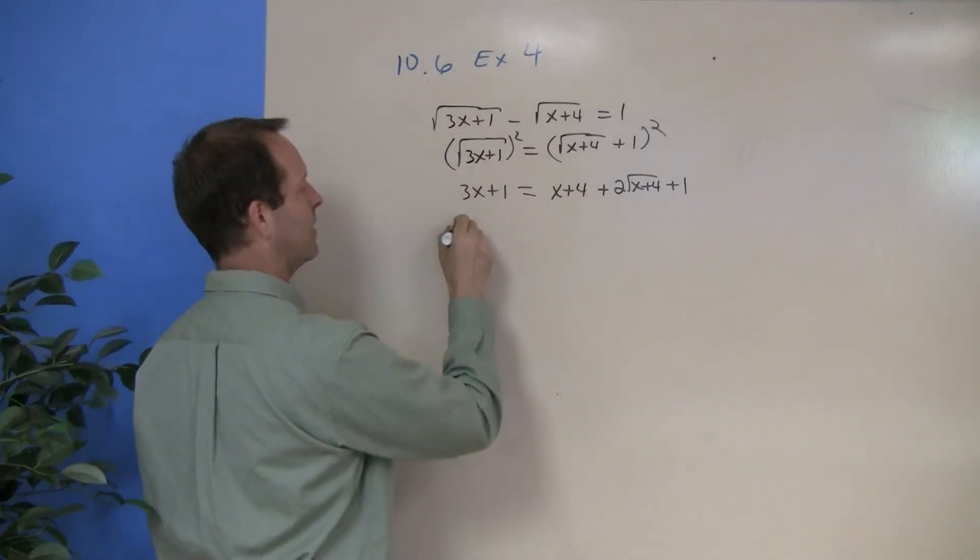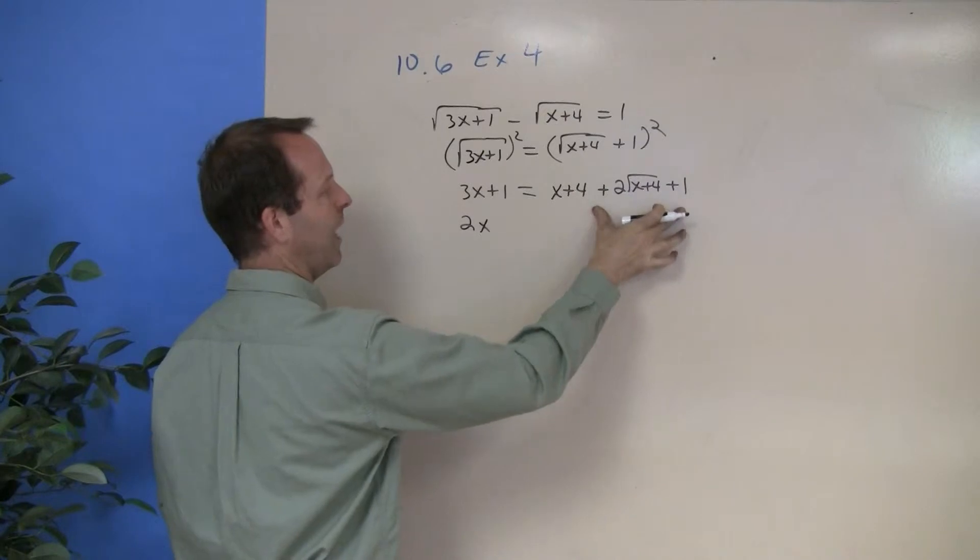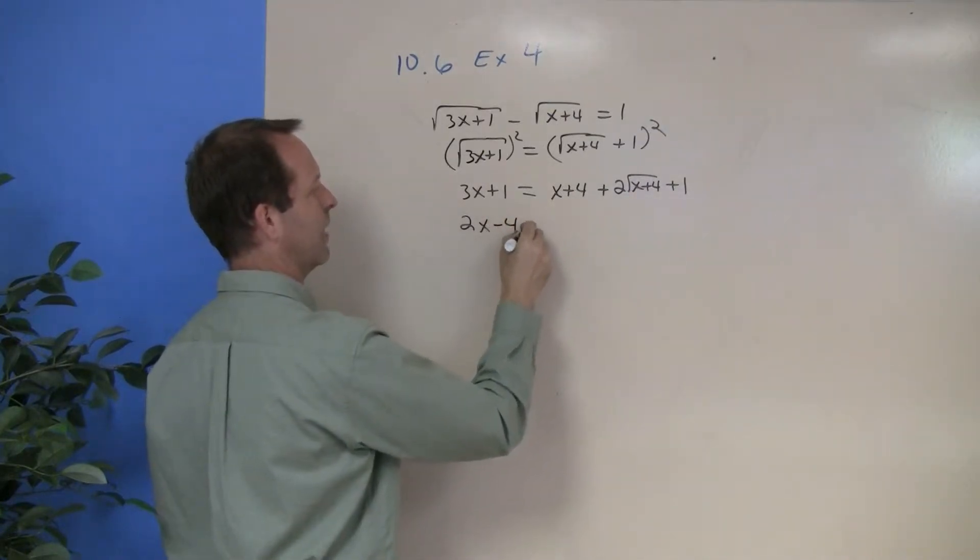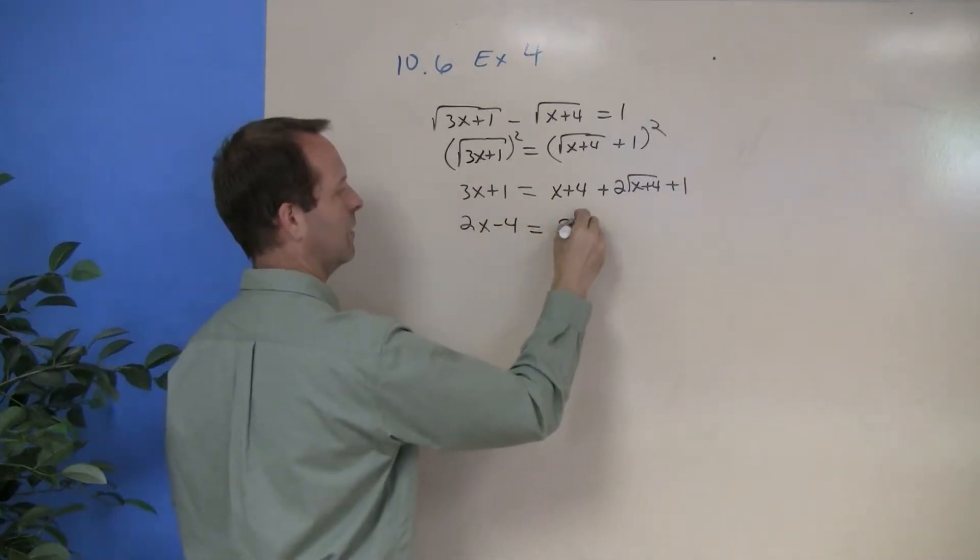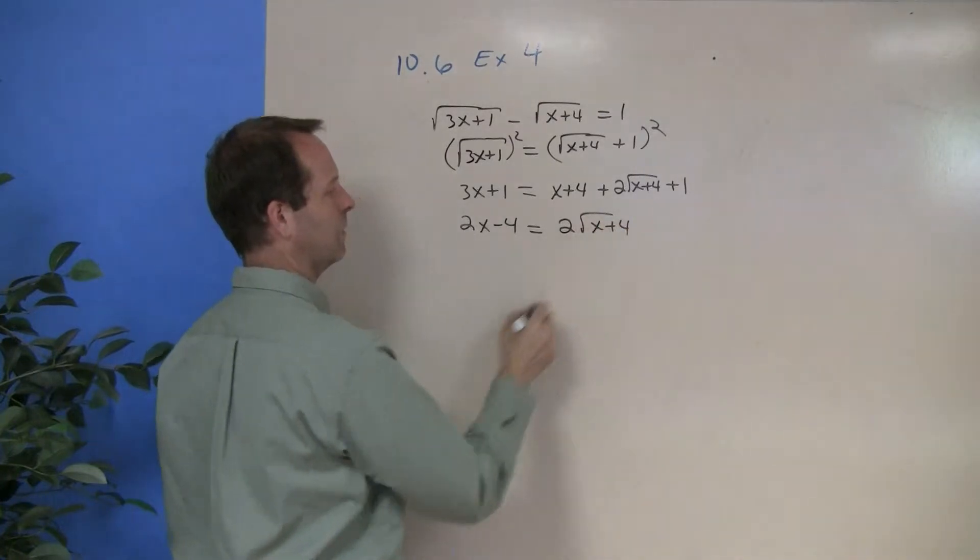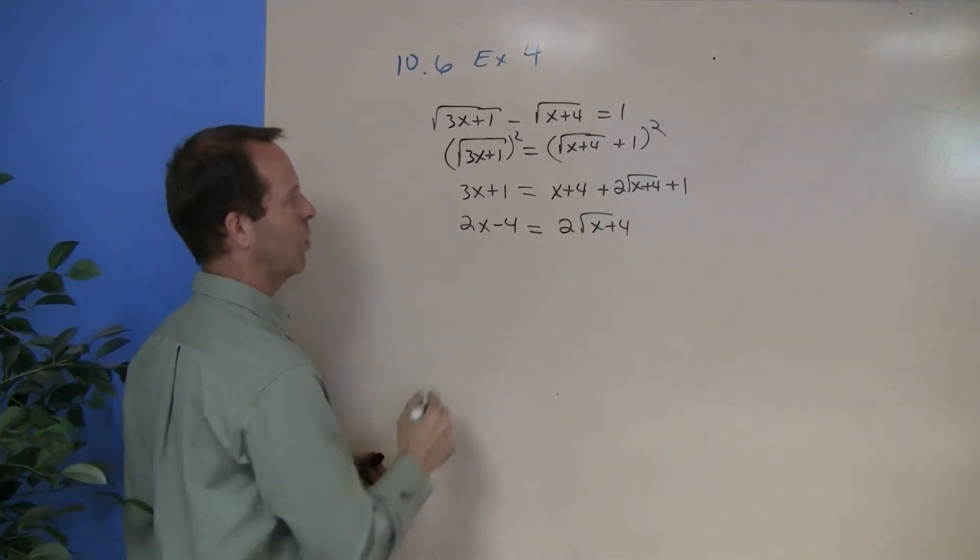Subtract x from both sides. 2x. A 4 plus a 1 is a 5. Subtract a 5. Gives me a negative 4. Square both sides.